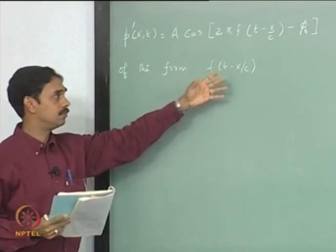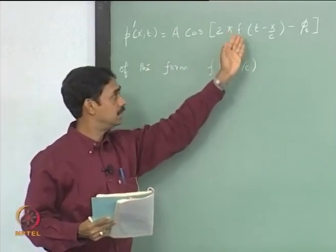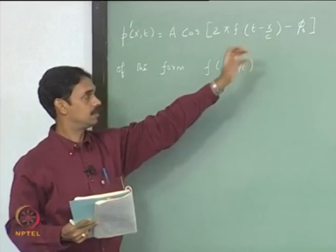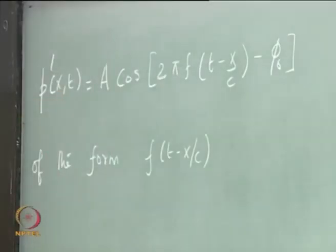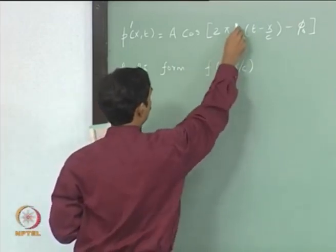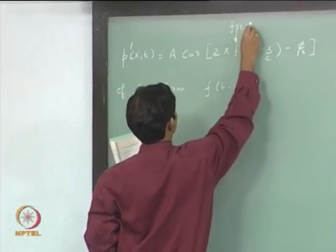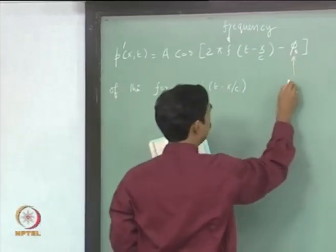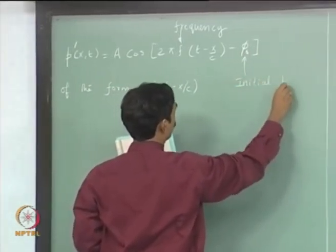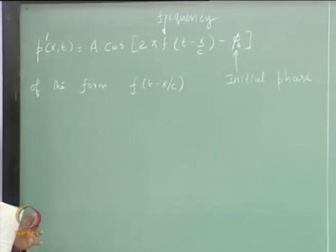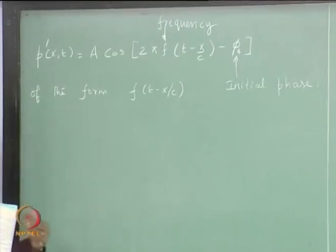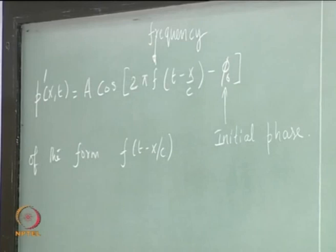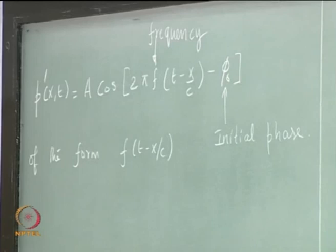If we had the other function g of t plus x over c, we could write the corresponding wave as A cos of 2π f times (t plus x over c) minus phi naught. This oscillates at a single frequency f. Here phi naught is the initial phase, which depends on your choice of coordinate system and when you start the clock — that is, with reference to a reference time t equal to zero.